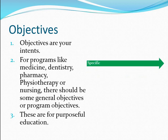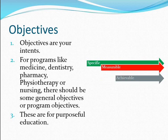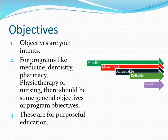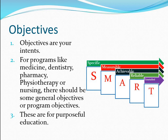How should objectives be framed? Objectives should be specific, measurable, achievable, reliable, and time-bound. The terminology is a SMART objective — your objectives should be SMART. All these terminologies are self-explanatory: the degree of specificity shall be determined so that it shall be measurable and quantifiable as well.